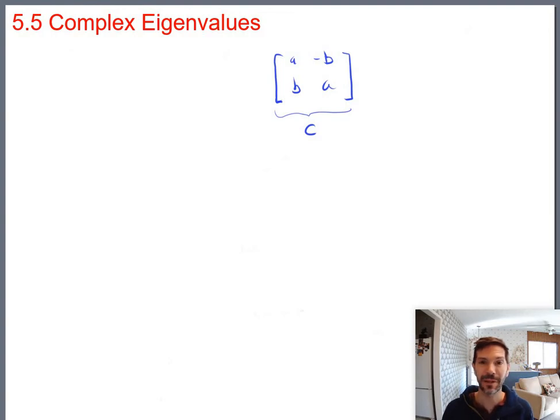Let's take a break from complex eigenvalues and eigenvectors, just for a minute, to explore 2x2 matrices that have this particular format, with A on the main diagonal, the same number, and B and its additive opposite on the off diagonals.